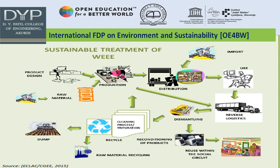Sustainable production begins with using raw materials, then goes through production design, production, distribution, import, and use, followed by reverse logistics. Disassembling involves cleaning and processing, then moving forward to the production and recycling process or disposal. This includes reconstruction and reusing within the supply circuit. Disassembling cleans material so it can be used as raw material for recycling. This is the sustainable treatment of waste electrical and electronics equipment.